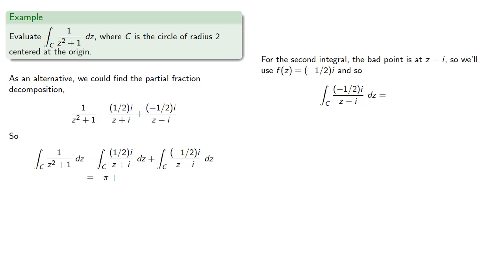For the second integral, the bad point is z equal to i. And so we'll use f(z) is negative one half i. And again, we find 2πi times (-1/2i) equals -π.